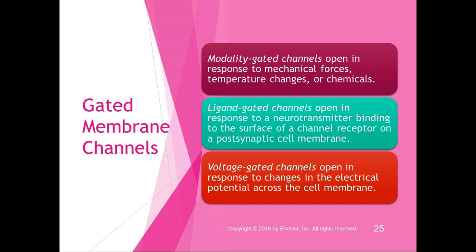Receptor channels are specific to their neurotransmitter — the neurotransmitter acts like a key that opens the lock to open the channel. Only that specific neurotransmitter will open the channel and allow ions to diffuse through. A voltage-gated channel opens in response to changes in the electrical potential across the cell membrane. All of these channel types interact together to make an action potential happen.